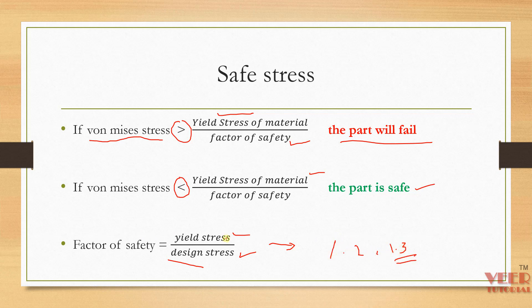For components like aircraft, the factor of safety is much higher because safety is extremely critical in aviation. These are all the basic fundamentals of Von Mises Stress.